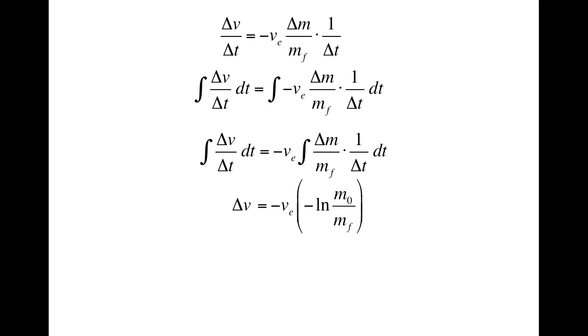And after doing so, we're left with the negative log of M0 divided by M final. There was a bit of hand-waving in that last step, but I'll get to that in the next part of the video. What's left is simply to cancel out the two negatives, leaving us with our rocket equation.